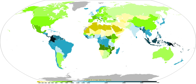Coalescence occurs when water droplets fuse to create larger water droplets, or when water droplets freeze onto an ice crystal, which is known as the Bergeron process. The fall rate of very small droplets is negligible, hence clouds do not fall out of the sky. Precipitation will only occur when these coalesce into larger drops. When air turbulence occurs, water droplets collide, producing larger droplets. As these larger droplets descend, coalescence continues, so that drops become heavy enough to overcome air resistance and fall as rain. Raindrops have sizes ranging from 0.1 mm to 9 mm mean diameter, above which they tend to break up.